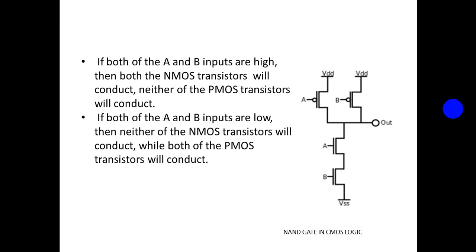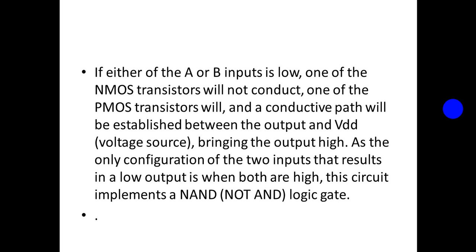If both A and B inputs are high, then both NMOS transistors will conduct. Neither of the PMOS transistors will conduct, and a conducting path will be established between the output and VSS ground, bringing the output low. If both inputs are low, both PMOS transistors will conduct, establishing a conducting path between the output and VDD, bringing the output high. If either A or B is low, one of the NMOS transistors will not conduct, one of the PMOS transistors will conduct, and the path will be established between the output and VDD, bringing the output high. Since the only input configuration that results in a low output is when both inputs are high, this circuit implements a NAND logic gate.